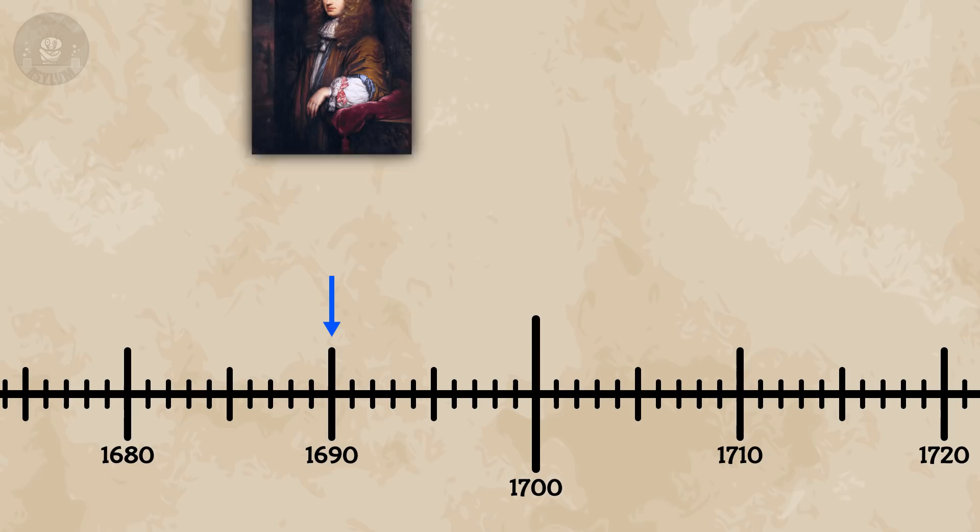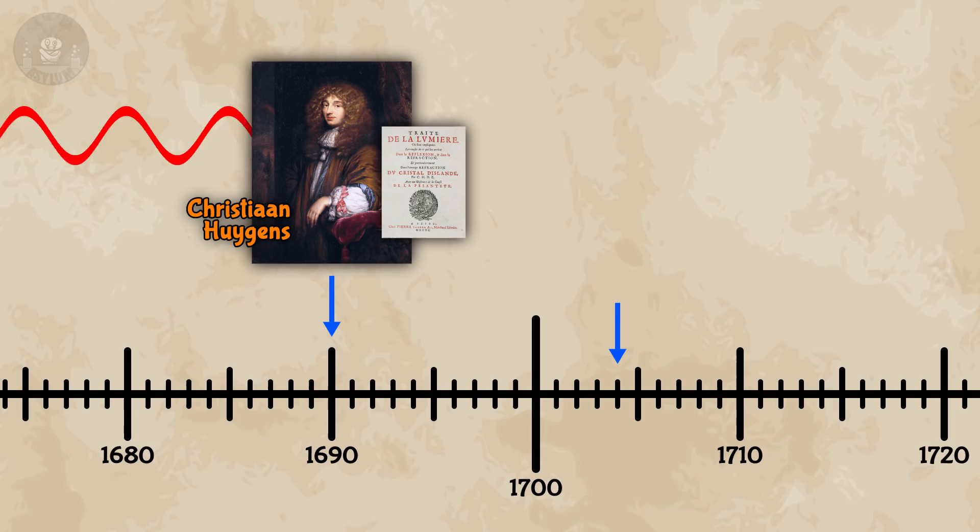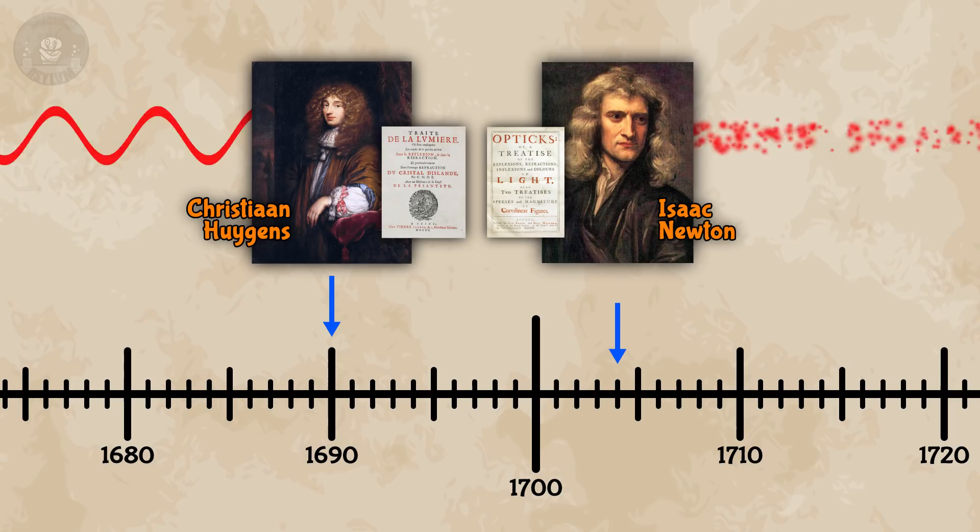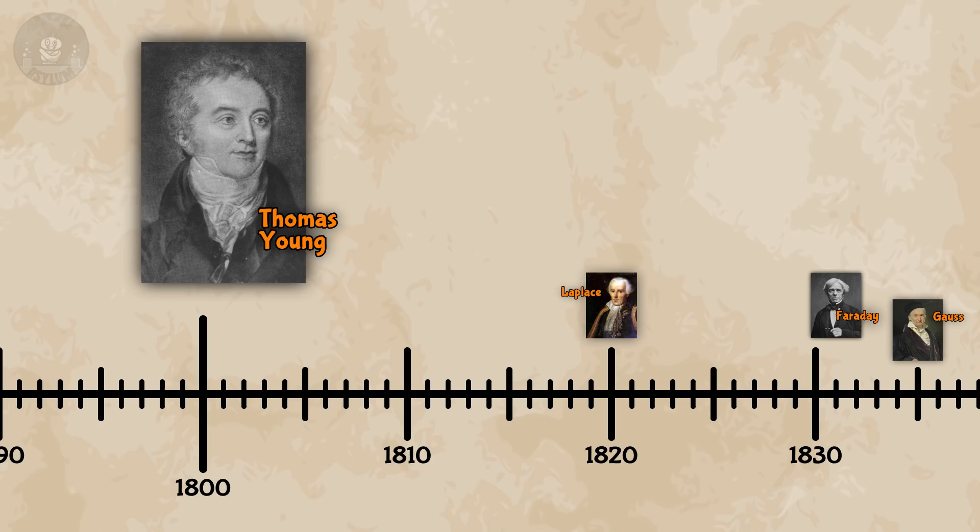We discovered light was a wave long before we knew what type of wave it was. To the timeline! In 1690, Christian Huygens published his Treatise on Light, where he suggested light was a wave. Then in 1704, Isaac Newton published Optics, where he suggested light was made of tiny little objects. The debate raged on for almost a century. It wasn't until Thomas Young performed the first double slit experiment in 1801 that we finally proved, without a doubt, that light is a wave.